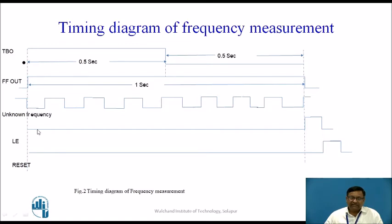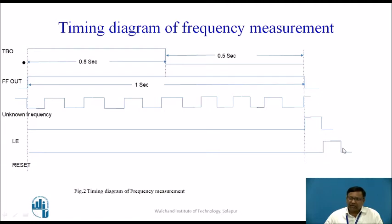That is why the latch enable signal is activated at the end of one second. After latching the data, the counter is prepared for the next measurement cycle by resetting the counter after the data is latched. After latch enable is made active, the reset is also immediately activated, which is necessary for the next measurement cycle.